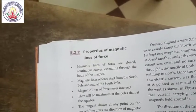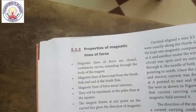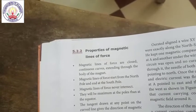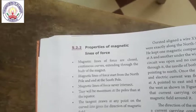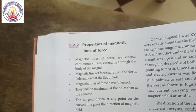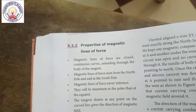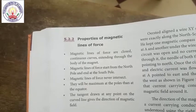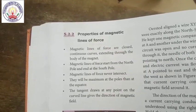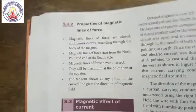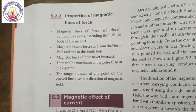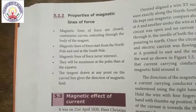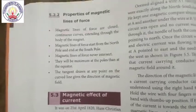Properties of magnet. What are the properties of magnetic lines of force? Magnetic lines of force are closed continuous curves extending through the body of the magnet. Magnetic lines of force start from the North Pole and end at the South Pole. Magnetic lines of force never intersect. They are maximum at the poles than at the equator. The tangent drawn at any point on the line gives the direction of the magnetic field.